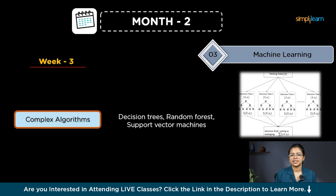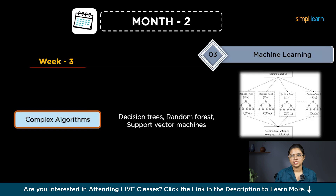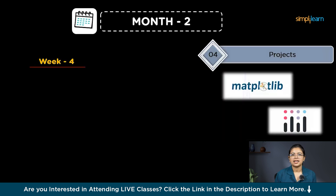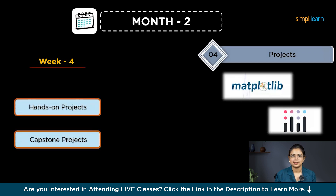Take your machine learning skills to the next level by learning more advanced algorithms. Decision trees are great for both classification and regression tasks. Random forests improve accuracy through ensemble learning. Support vector machines are used for classification tasks. These tools will help you build more sophisticated and accurate models.